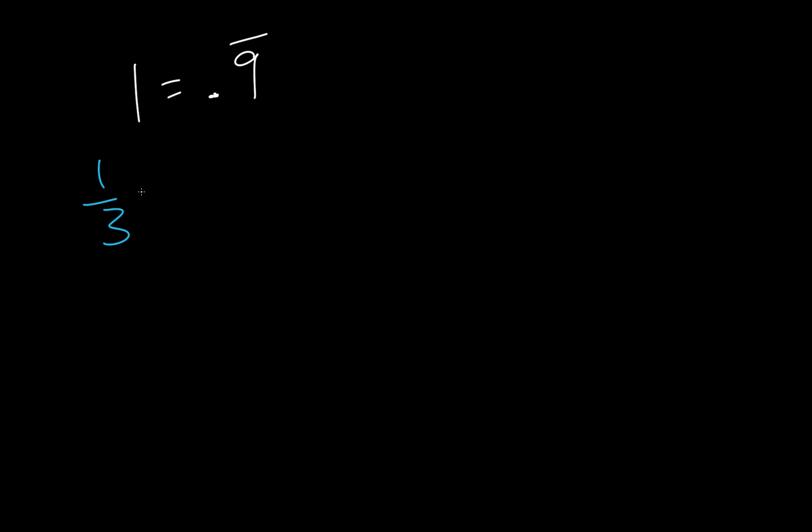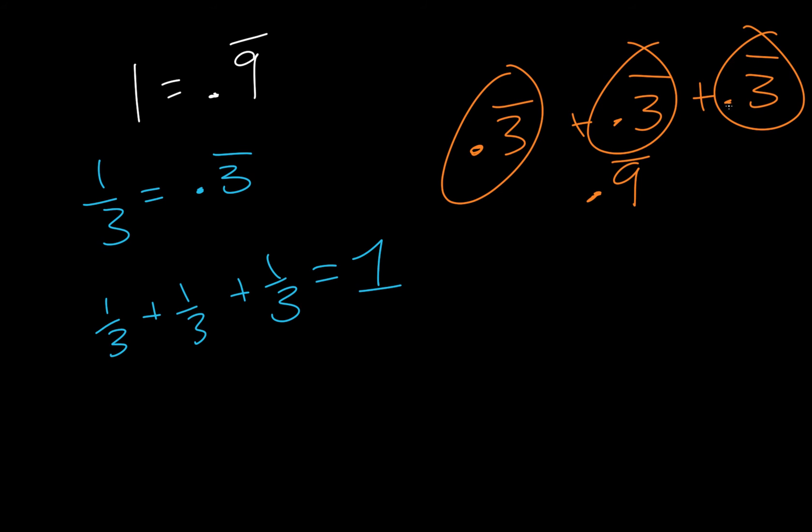So most people will agree that 1 third is equal to .3 repeating. People will also agree that 1 third plus 1 third plus 1 third is 1. If you think of a pie cut into three pieces, you put those pieces back together, you get one whole pie. People will generally agree that .3 repeating plus .3 repeating plus .3 repeating is .9 repeating. Since this is 1 third, 1 third, 1 third, it's equal to 1. And therefore, .9 repeating is also equal to 1. So once again, they're not close to each other. They're exactly the same thing.